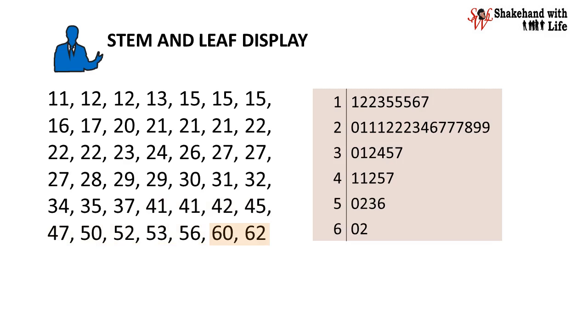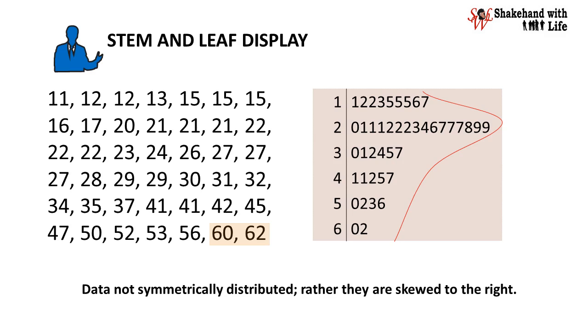As you can see, the stem and leaf display is a very quick way of arranging the data in a kind of histogram turned sideways that allows us to see what the data look like. Here we note that the data do not seem to be symmetrically distributed, rather they are skewed to the right.